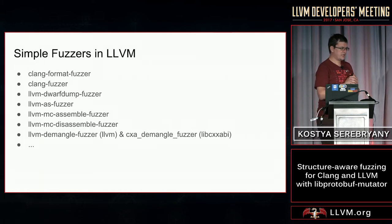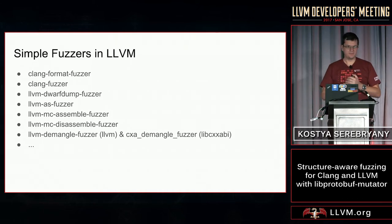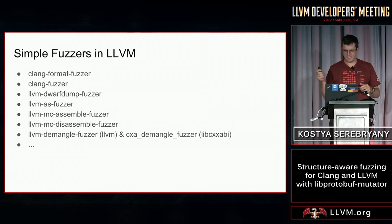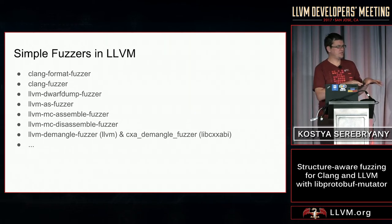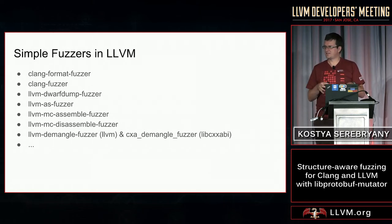We already have a bunch of what I call simple fuzzers in our LLVM tree. That includes clang-format, clang-fuzzer, dwarf-dump, two different demanglers, and so on. But having the fuzzers in the tree is not enough. You may have tests, but unless you run the tests, you won't find the bugs. Same with fuzzers — you need to run them somehow.